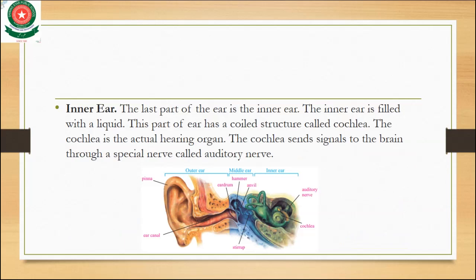Next is the inner ear — the last part of the ear — which is filled with liquid. It has a coiled structure called the cochlea, which is the actual hearing organ. The cochlea sends signals to the brain through a special nerve called the auditory nerve.